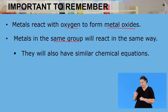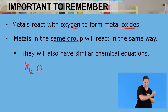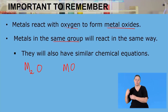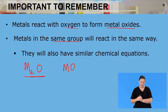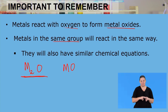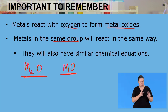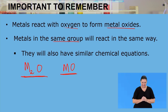Those reactions will also have similar chemical equations. The product can either be M₂O or MO. If the metal is from group one, the ratio of the product is M₂O, where M denotes the metal from group one. If the metal is from group two, the product has a ratio of one to one, written as MO, where M denotes the metal from group two.